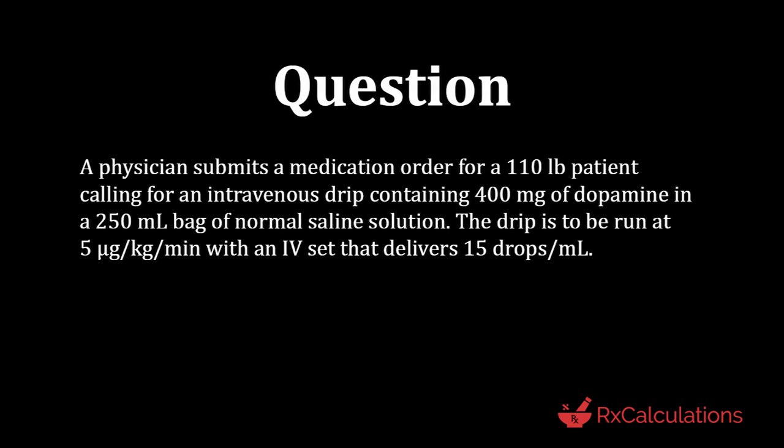Let's get right to the question. A physician submits a medication order for a 110-pound patient calling for an intravenous drip containing 400 milligrams of dopamine in a 250-milliliter bag of normal saline solution. The drip is to be run at 5 micrograms per kilogram per minute with an IV set that delivers 15 drops per milliliter. This question is in four parts.